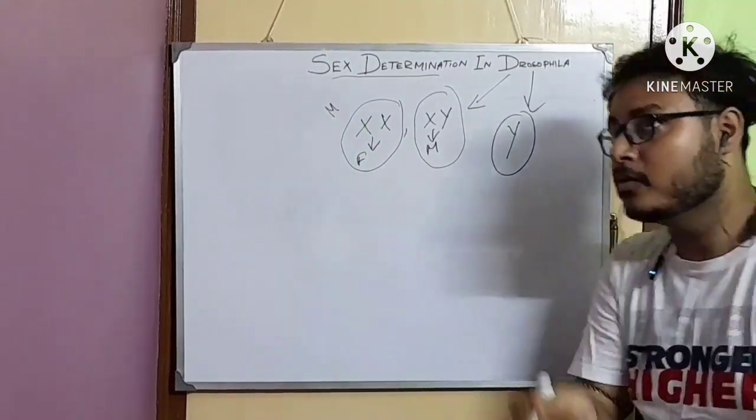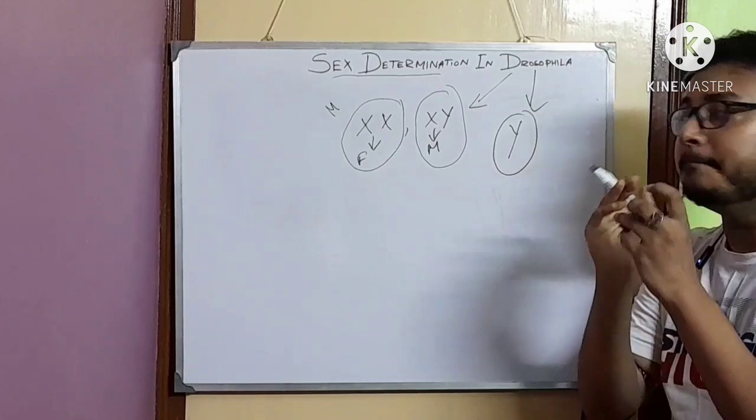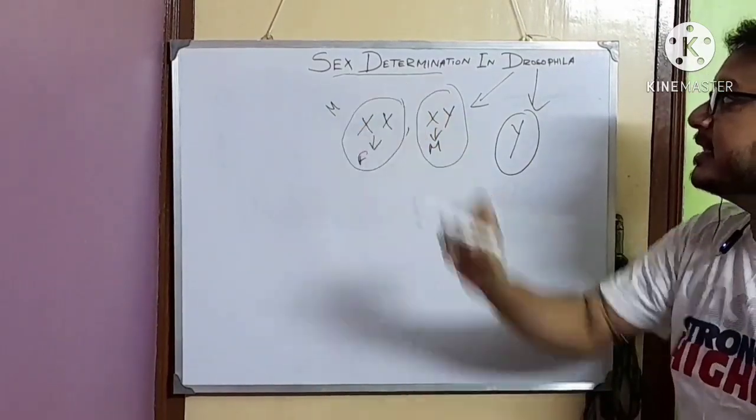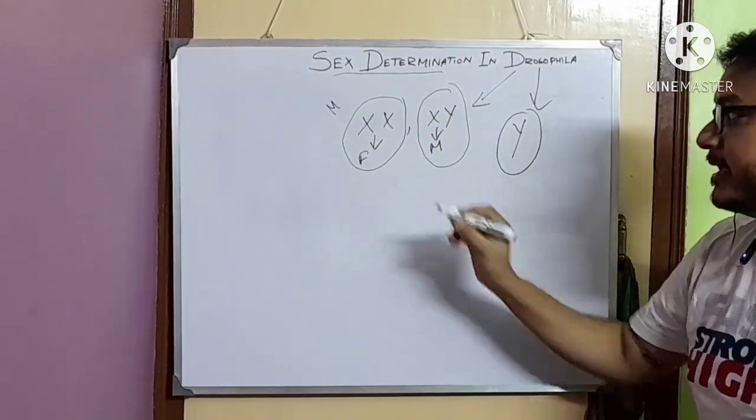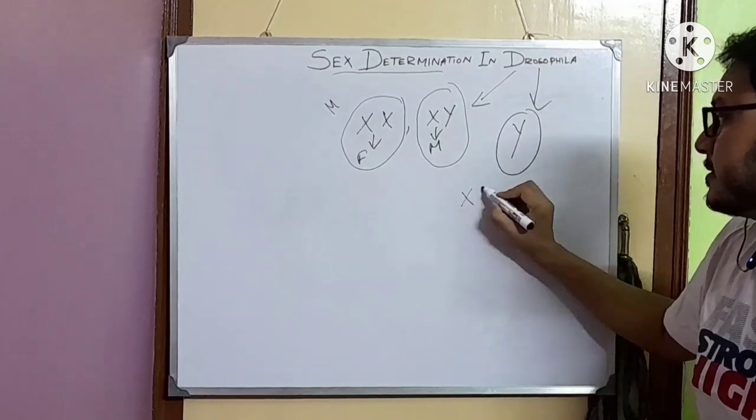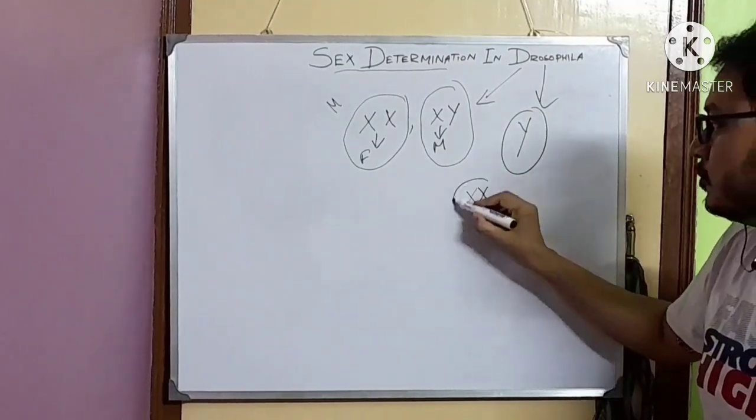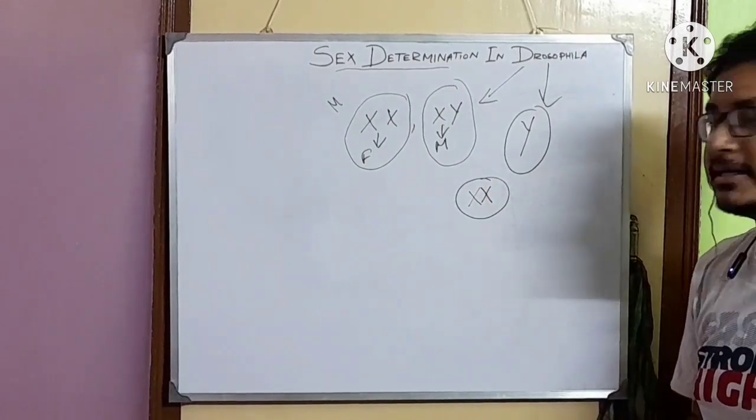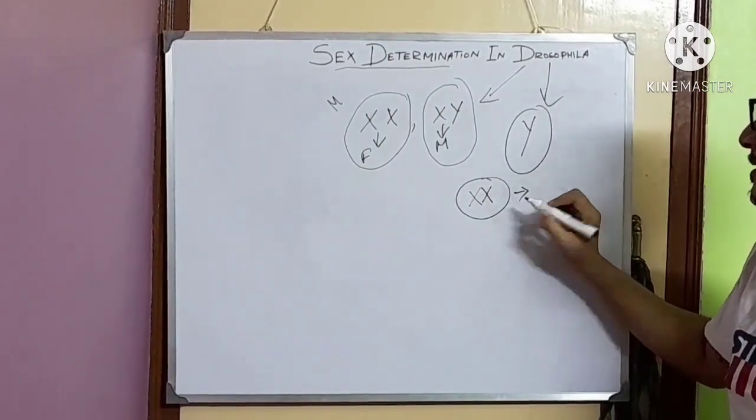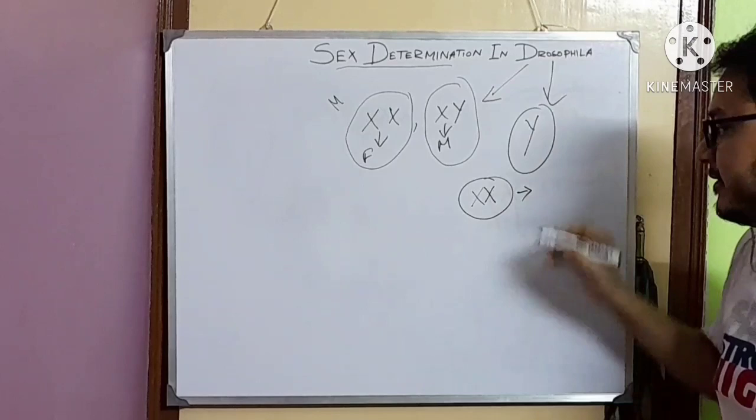So what is the main role in determination of sex in Drosophila is X chromosome. In diploid cells, if two X chromosomes are present, then that fly will be female.